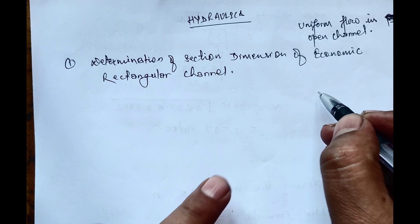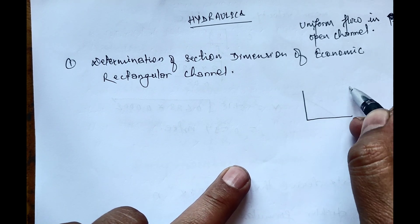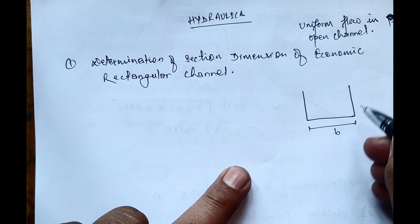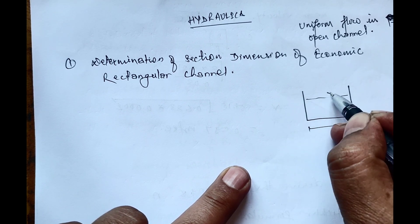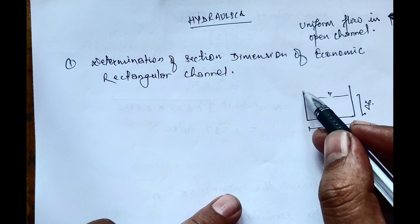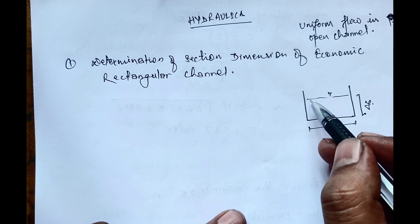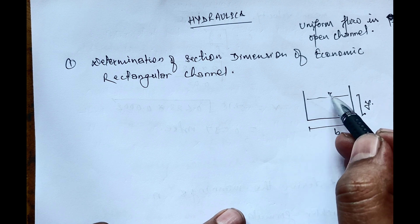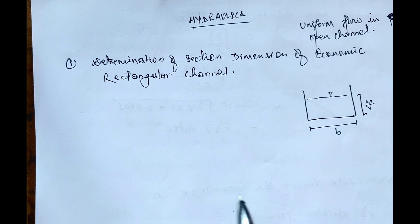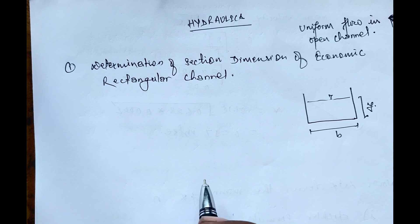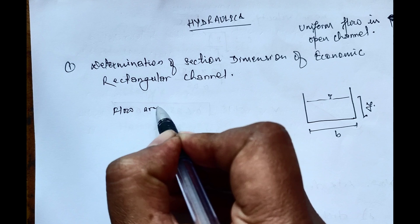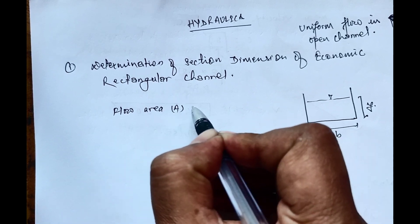We will consider a rectangular channel having width equal to B and depth equal to y. This is the rectangular channel where water is up to this level.